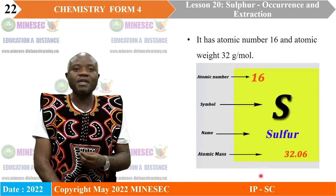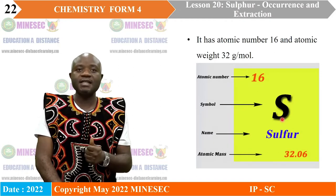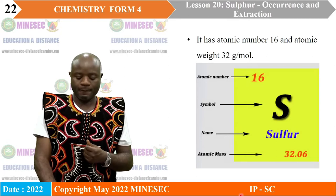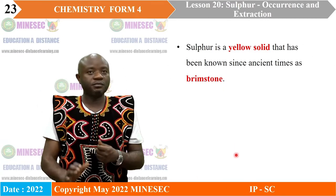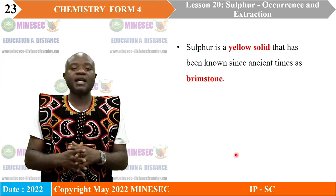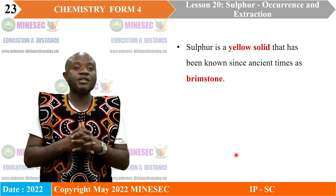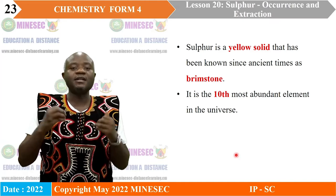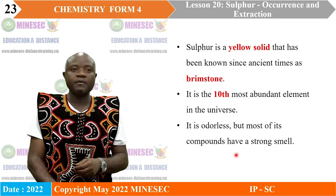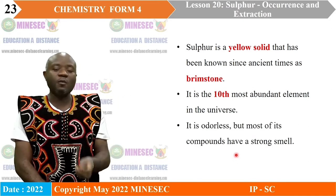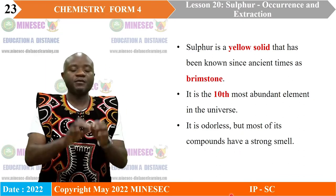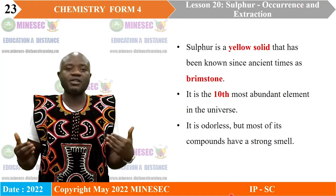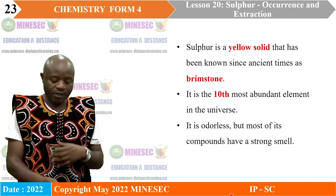The symbol for sulfur is S, its atomic number is 16, and its mass number is 32. Sulfur is a yellow solid known since ancient times — over 2000 years BC it was already known and was called brimstone. It is the 10th most abundant element in the universe. It is odorless, but most of its compounds have a very strong smell. When sulfur exists in the liquid or molten state, it is red in color, but when it solidifies, it becomes yellow again.